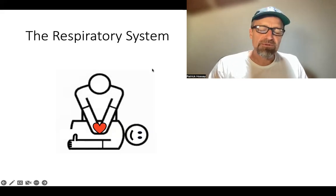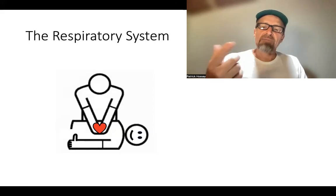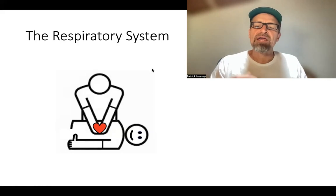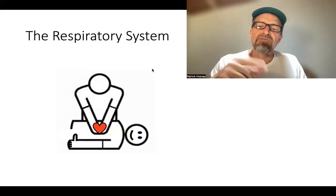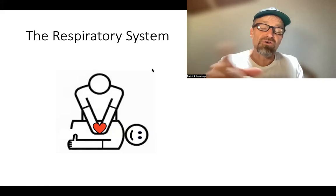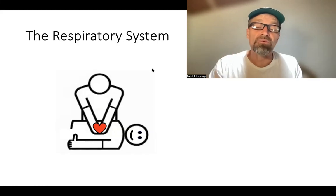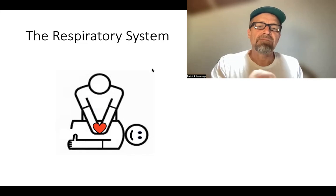When we talk about the respiratory system, we're really talking about the upper and lower airway and the functioning of the lungs. We're going to cover a little bit of pathophysiology — what can go wrong with the respiratory system — just to give you some sense of how this all comes together.